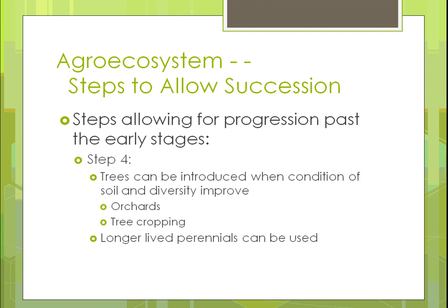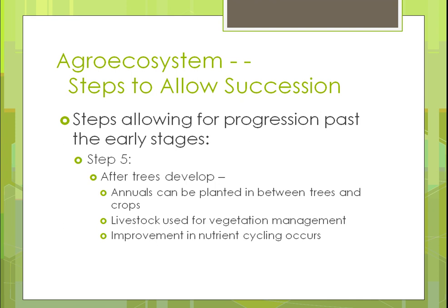Step four is introducing trees to improve the environment and the soil. You could put in an orchard, or do tree cropping with trees that stabilize soil and can be sold to nurseries. You can also use longer-lived perennials to provide diversity for different insects. If you have a disease problem, planting different perennials will always be there to help the crops you're growing.